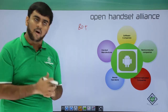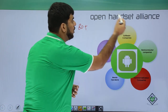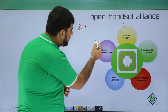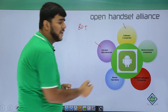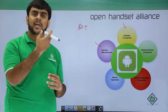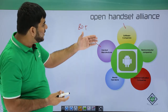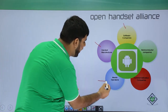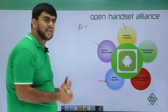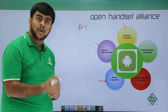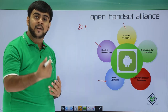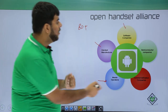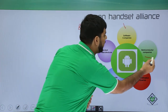Now, what are these companies? These companies are software companies like Google, eBay, then some handset manufacturers — Samsung, Xiaomi, LG, HTC. All these companies are clubbed in with mobile operators like Airtel, Vodafone, AT&T, and Verizon.